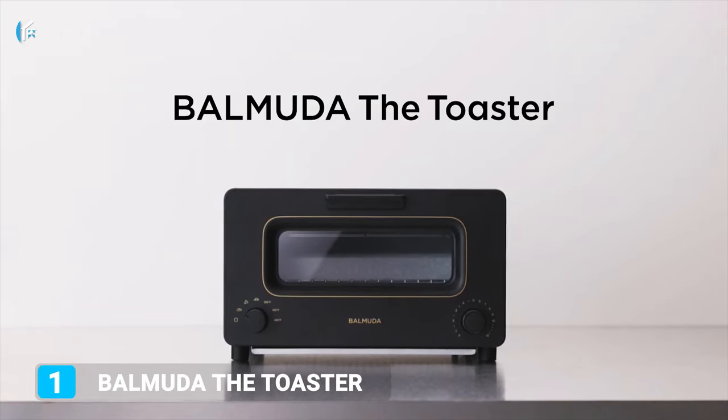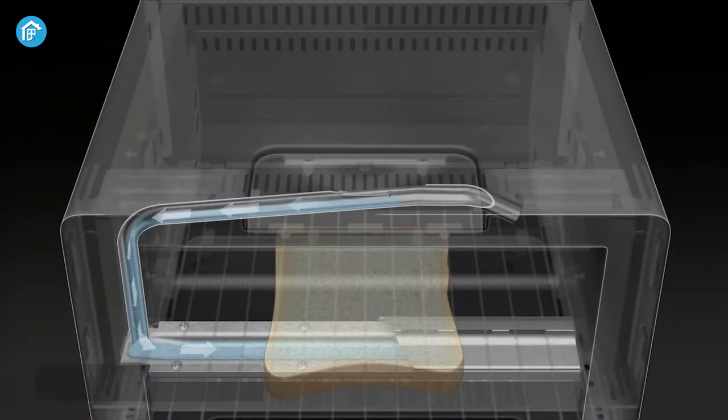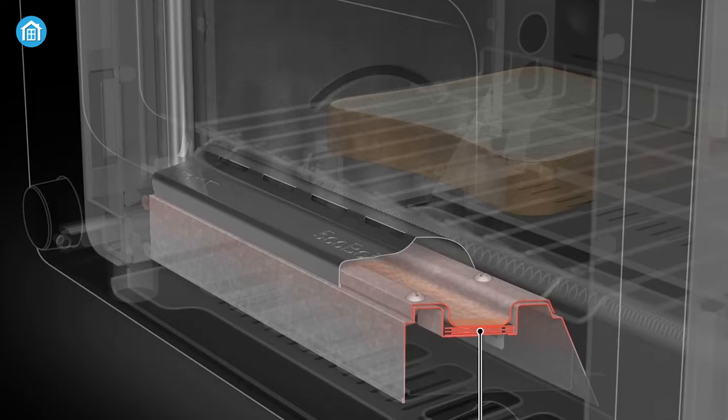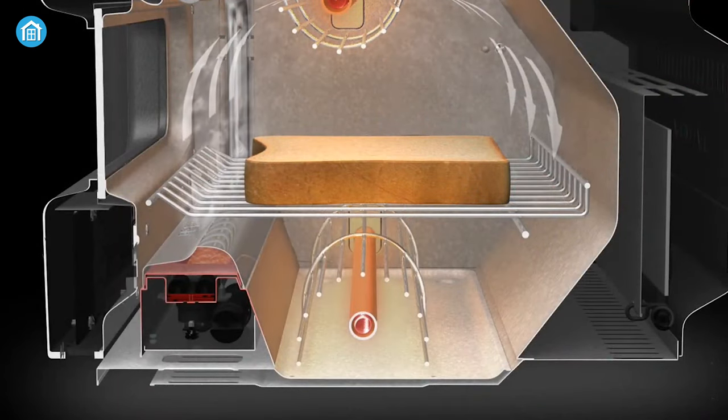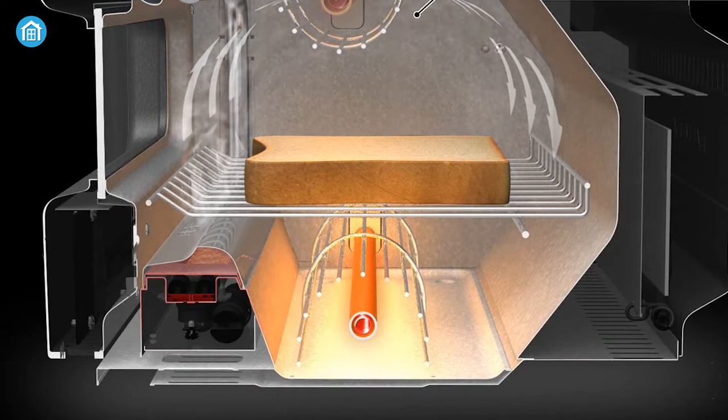Okay, our final product is called Balmuda the Toaster. Featuring a revolutionary technology that combines steam with precise heat control, its five unique heat modules are designed to bring out the best in any dish.